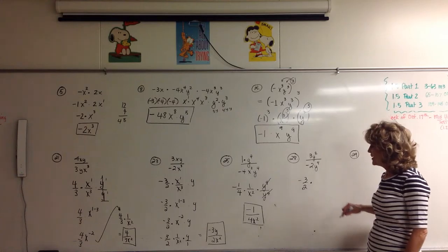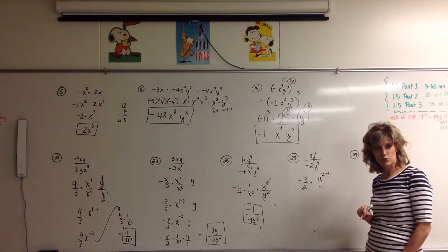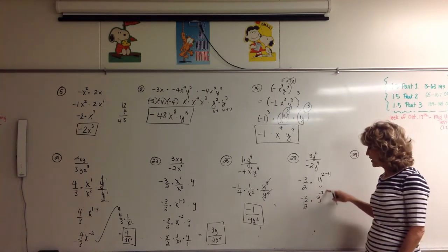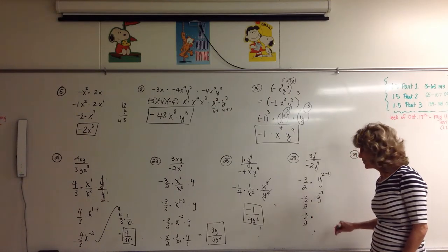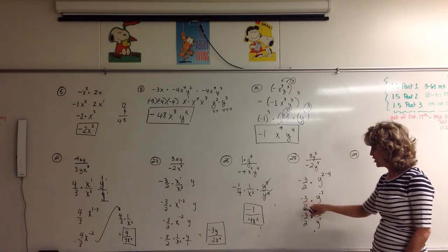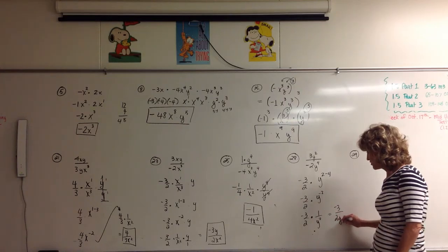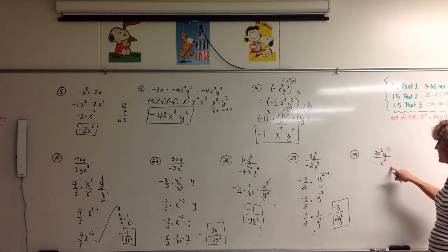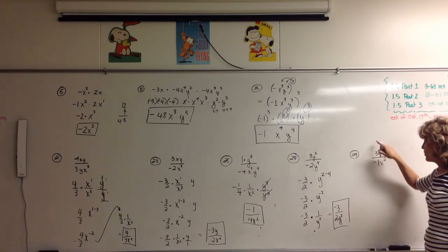On number 28, the number is a positive divided by a negative — one negative sign, so odd number of negatives means it's negative. So I'm going to have negative 3 over 2. Then I have to subtract: y to the 2 minus 4 is y to the negative 2. We can't leave a negative exponent, so we rewrite this as negative 3 over 2 times 1 over y to the positive 2. Multiplying straight across gives us negative 3 over y squared.